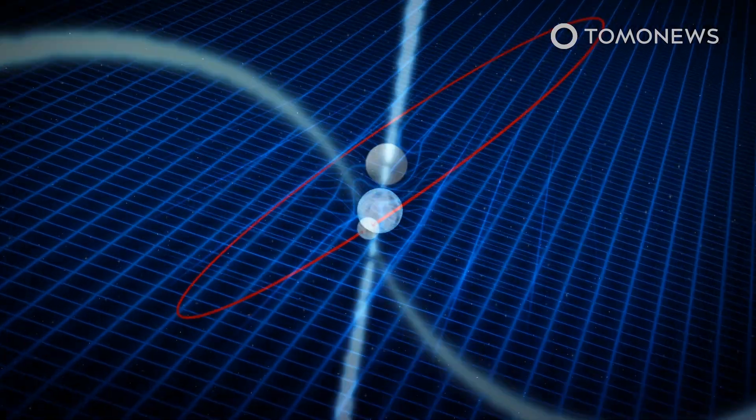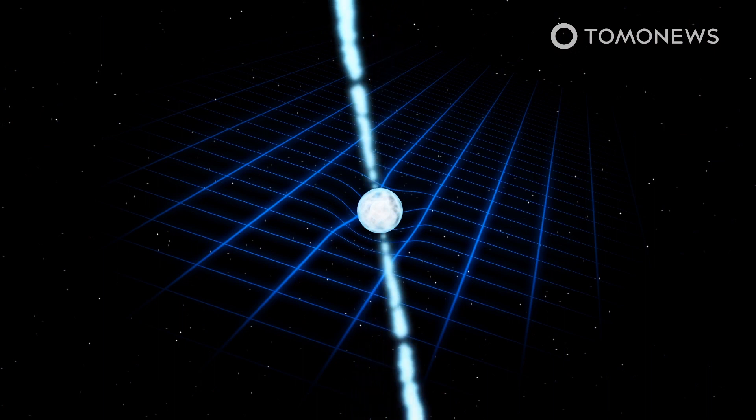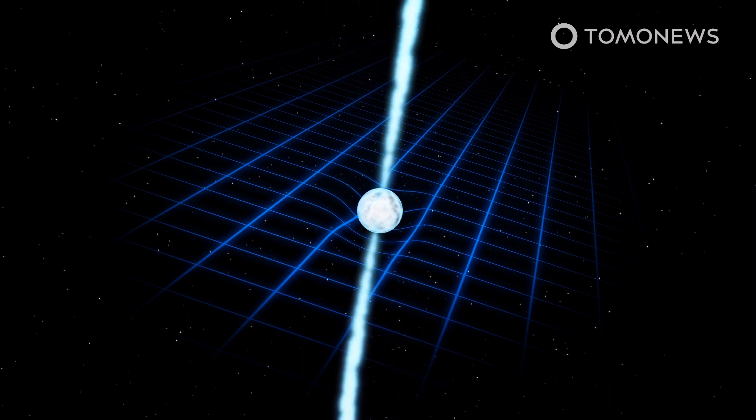Frame-dragging imparts a wobbling effect on the pulsar and makes the neutron star twirl on its axis about 30 times an hour.